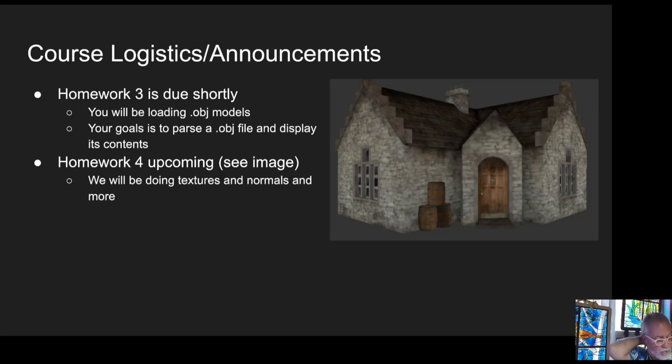Assignment 3 is due shortly. You're doing processing of the .obj files. I'm still playing around with homework 4. I don't want you to have to redo what you did in assignment 3, but basically at the end of assignment 4, you will see objects that look like this, which are textured objects. This particular image doesn't have that many polygons, but it has a lot of detail.